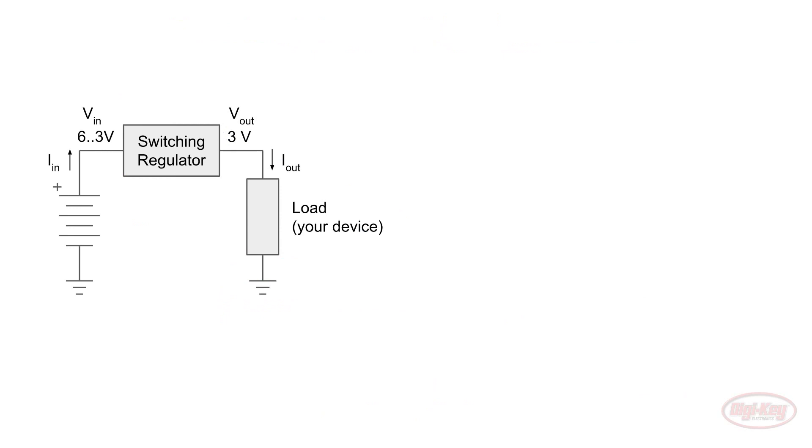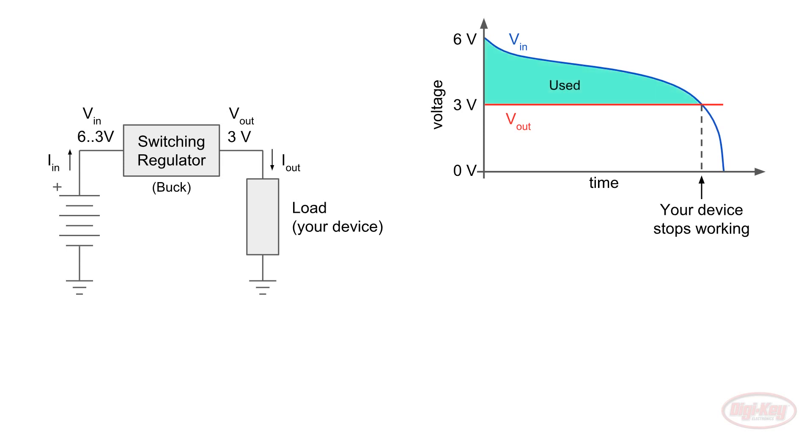The other type of voltage regulator is the switching regulator, which uses active components like transistors to pulse the input voltage to maintain the output voltage. In this example, we'll show a step-down converter, also known as a buck converter, that takes an input voltage greater than 3 volts and converts it to 3 volts. Notice that like the linear regulator, it also stops working when the batteries dip below 3 volts. Unlike a linear regulator, however, the buck converter can use the excess voltage. To accomplish this, the switching regulator attempts to make the power output equal to the power input, minus any inefficiencies in the regulator itself.